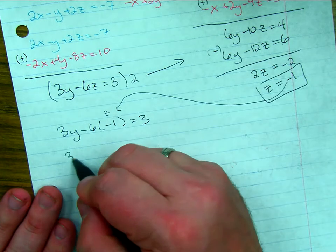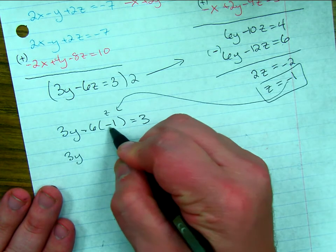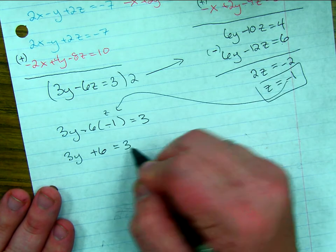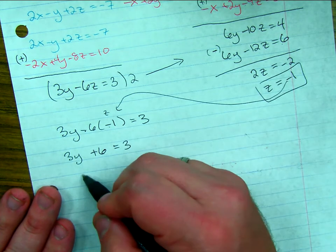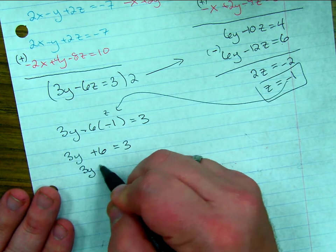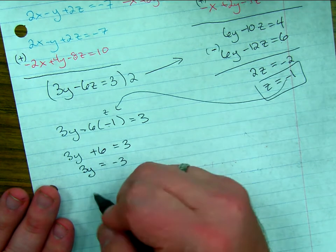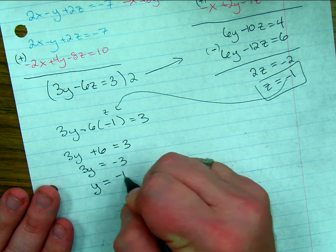That gets me 3y. Negative 6 times negative 1 is positive 6. Equals 3. Subtracting 6 from both sides. 3y equals negative 3. Dividing both sides by 3. Y equals negative 1.